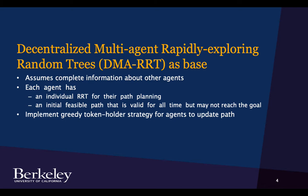So it assumes all agents can somehow communicate with all other agents. And each agent starts with their individual initial feasible path, which could just be them staying at the same position for all time. That may not actually reach the goal, but that's fine. They'll be safe if they're staying at the same position, initial position. And then they have an individual RRT that they use for their path planning.